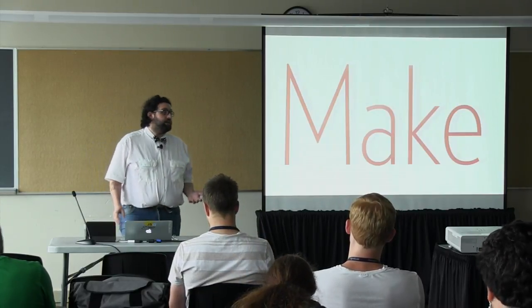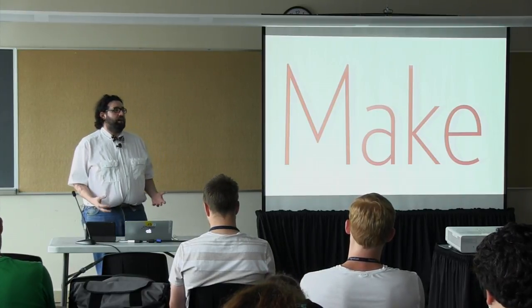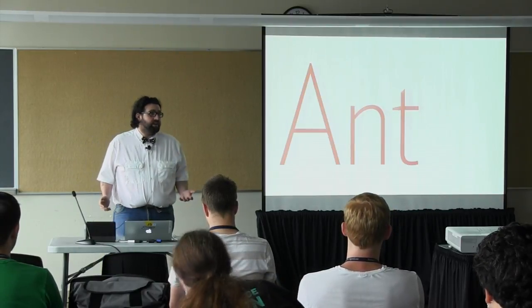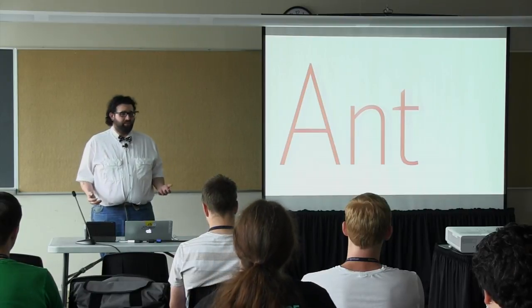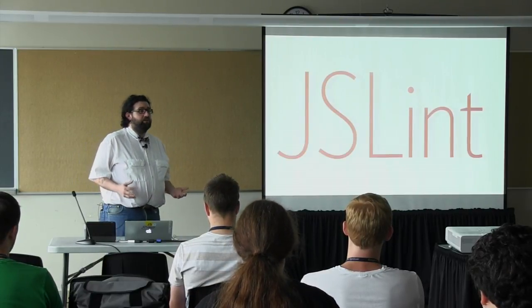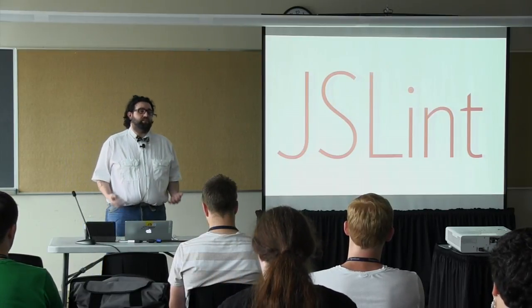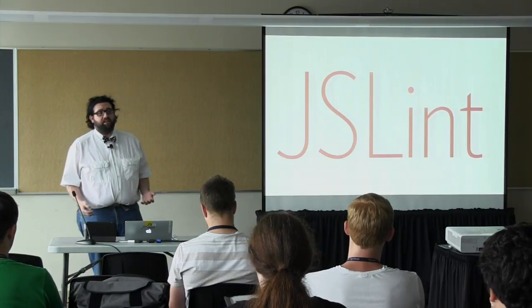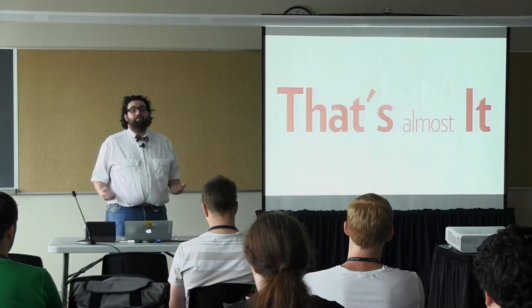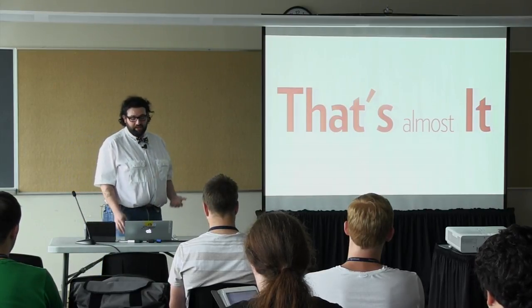You had Make — your main option if you wanted to have a build process that lived in your repository. Another option at the time was Ant, but no one really wants to write XML. If you wanted to figure out if your JavaScript looked good, you only had one option: JSLint, and it was completely unconfigurable. That was really about it when it came to tools for front-end web development and PHP projects.